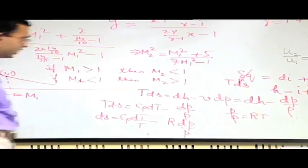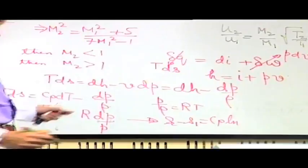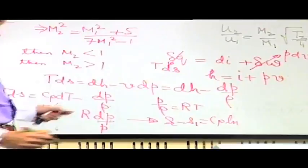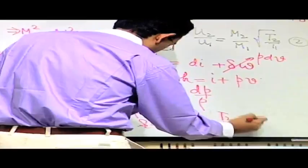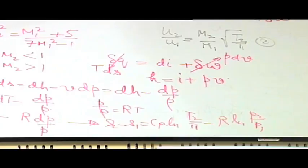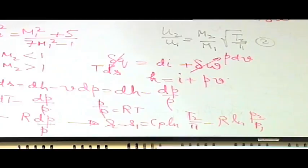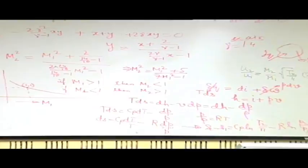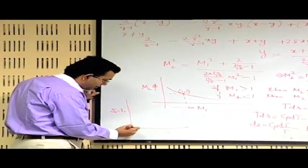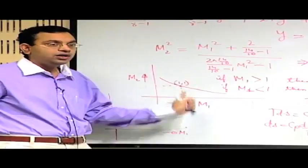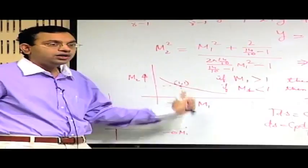Integrating this expression, we get S2−S1 = Cp·ln(T2/T1) − R·ln(P2/P1). Since T2/T1 and P2/P1 can be expressed explicitly in terms of M1 and M2, and M2 is solely a function of M1, we can in principle express S2−S1 as a function of M1 alone.